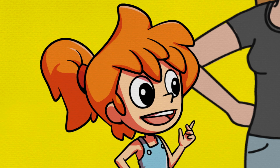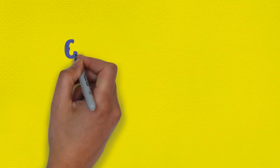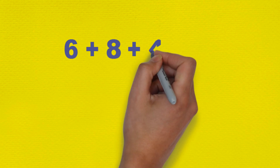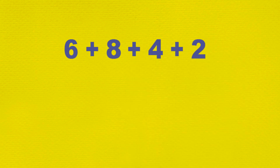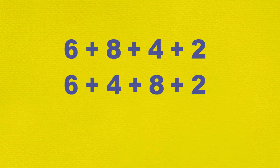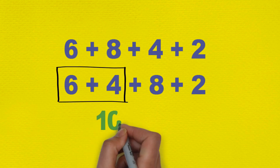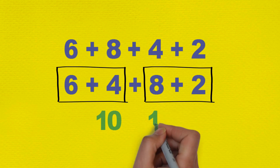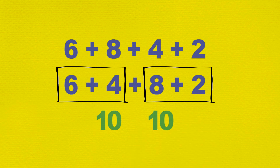"So mum," said Min, "sometimes just changing the order when we write the numbers makes them easier to add or subtract. For example, adding 6 plus 8 plus 4 plus 2 would be easier if we wrote them in this order: 6 plus 4 plus 8 plus 2, because it is easy to see that 6 plus 4 equals 10, and 8 plus 2 equals 10, so the total is 10 plus 10, which equals 20."